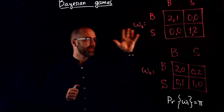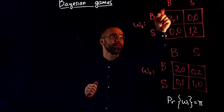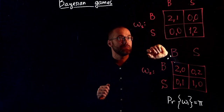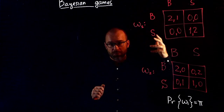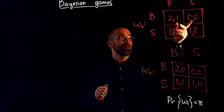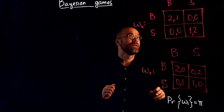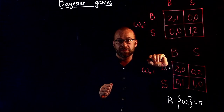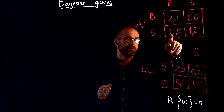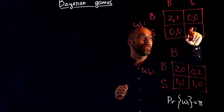A simple example is a game depicted here. There are two players, player 1 and player 2, and each player has two actions available: B and S. Therefore, there are four action profiles: both players playing B, one playing S and the other B, the reverse, and both playing S. Player 1's payoffs are: when both play B, he gets 2; when he plays S and the other plays B, he gets 0; when he plays B and the other plays S, he gets 0; and when both play S, he gets 1.